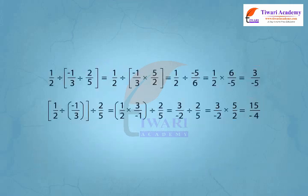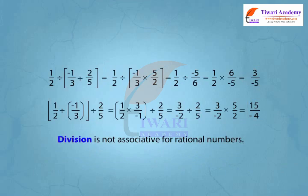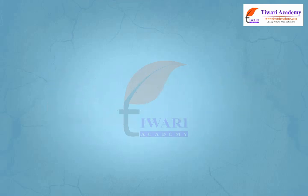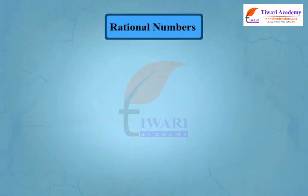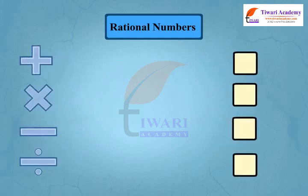If we change the order in division then we get different answers. Therefore, rational numbers are not associative under division. Thus, we can say rational numbers are associative under addition and multiplication but not under subtraction and division.